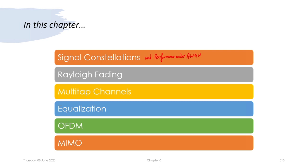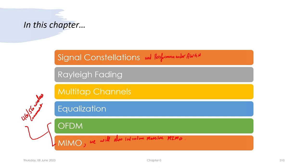We will talk about fading, multitap channels, equalization, and MIMO. If time permits, we will also introduce massive MIMO. OFDM and MIMO are ideas from 4G and 5G wireless communications — these are the physical layer aspects of 4G and 5G. We will talk about all of this in whatever time we have with this course.